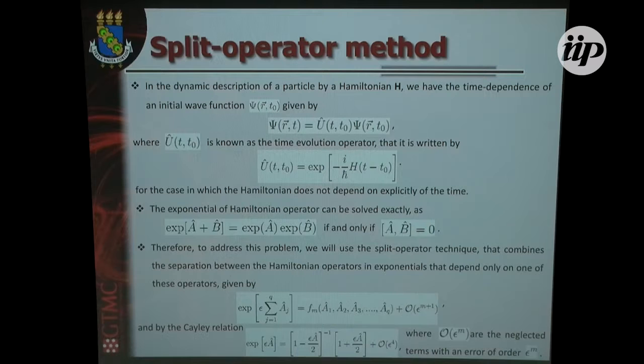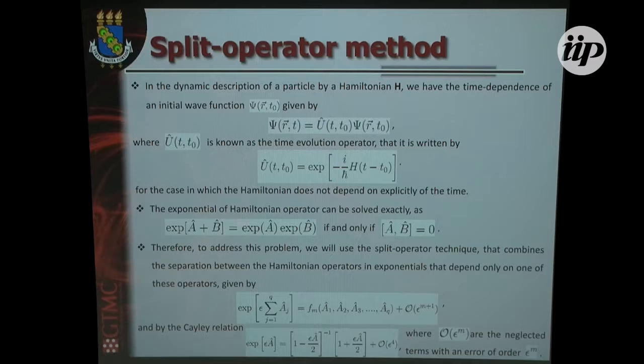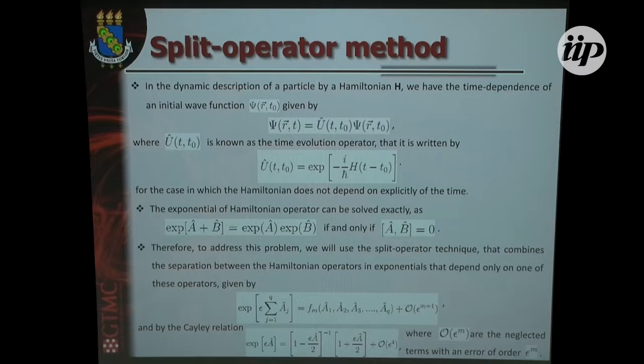Since the Hamiltonian in general is given by kinetic and potential parts, and in general these do not commute, we cannot simply expand the exponential as a product of two exponentials. In order to expand this exponential as a multiplication of two exponentials, we cannot do it in general because the kinetic and potential parts do not commute. So what you have to do — as the technique name says — is to split the time evolution operator in order to compute it more easily.